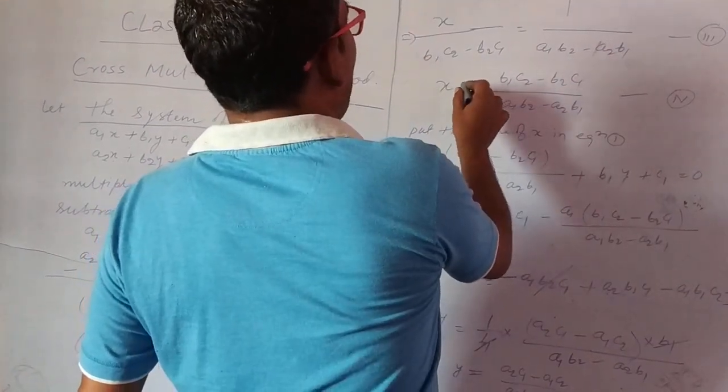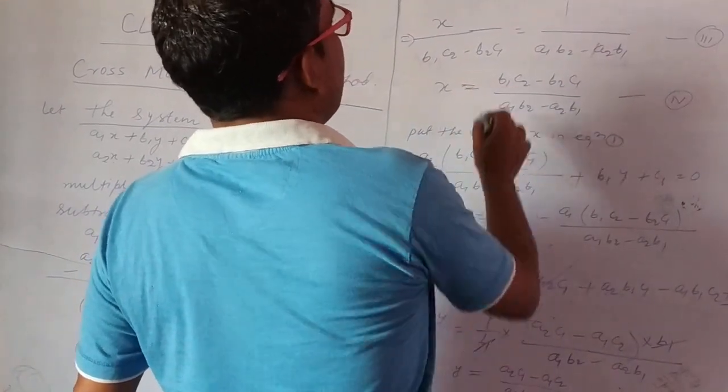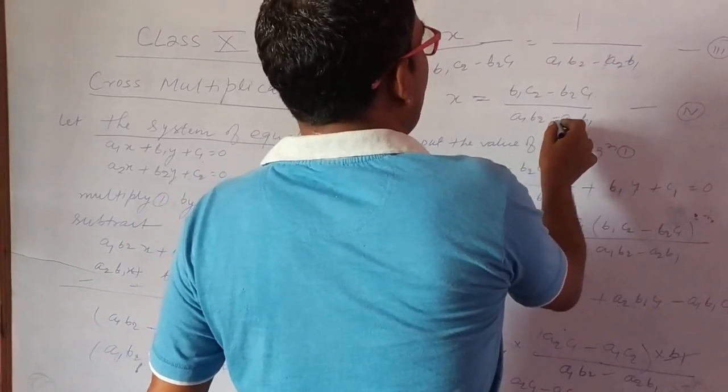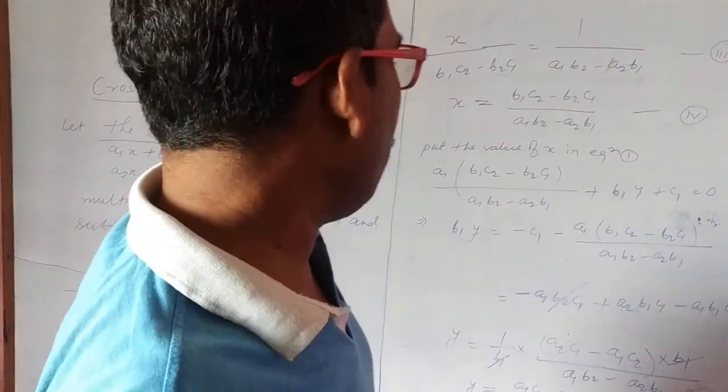And x can be, and from this equation number 3, b1c2 minus b2c1 by a1b2 minus a2b1. This is considered as equation number 4.